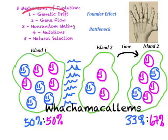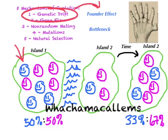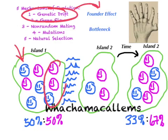Genetic drift is any change in allelic frequencies in a population that is due to chance. Genetic drift is more likely to happen in smaller populations, which is why Hardy-Weinberg requires a large population. There are two ways a population can become small enough for genetic drift to occur. The first is called the Founder Effect, which is when a small population settles in a location separated from the rest of the population. Because it is such a small sample, they may have very different allelic frequencies. For example, on Island 1 we have 50% blue and 50% pink Wachima columns. When some travel to the next island and reproduce, many generations later Island 2 may have 33% blue and 67% pink Wachima columns — very different from the main island.